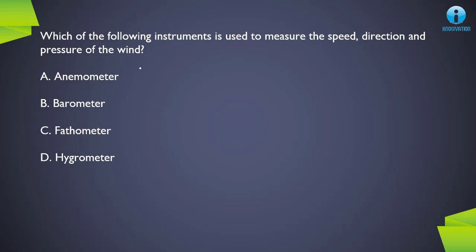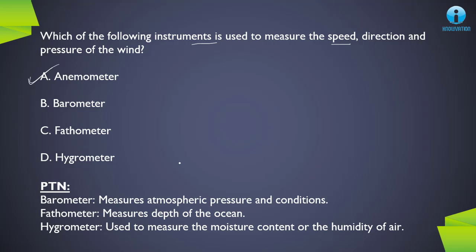Next question: which of the following instruments is used to measure the speed, direction, and pressure of wind? The correct answer is A, Anemometer — used to measure the speed and direction of wind. Other important instruments: Barometer measures atmospheric pressure; Fathometer measures the depth of the ocean; and Hygrometer measures moisture content or humidity in the air.